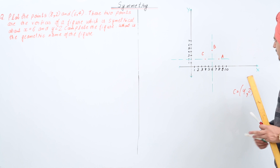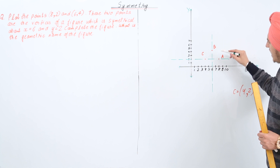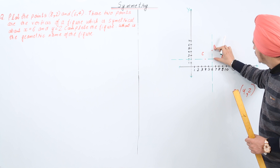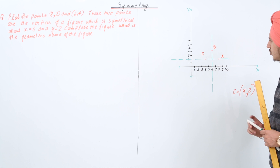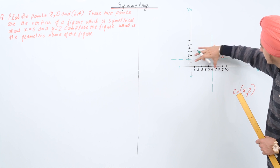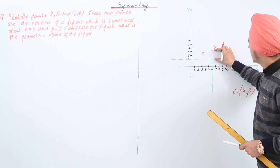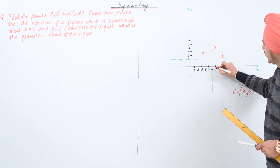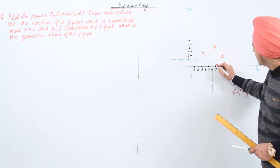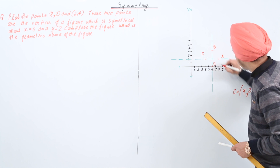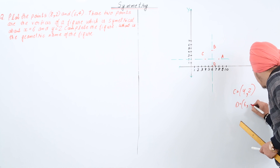Next, we take the mirror image of B in the line y = 2. Point B is 2 units above y = 2, so we move two units below y = 2, keeping the same x-distance. The point B is (6, 4) and (6, 2) is on the line, so this new point will be (6, 0). Let's name it D. The coordinates of D are (6, 0).